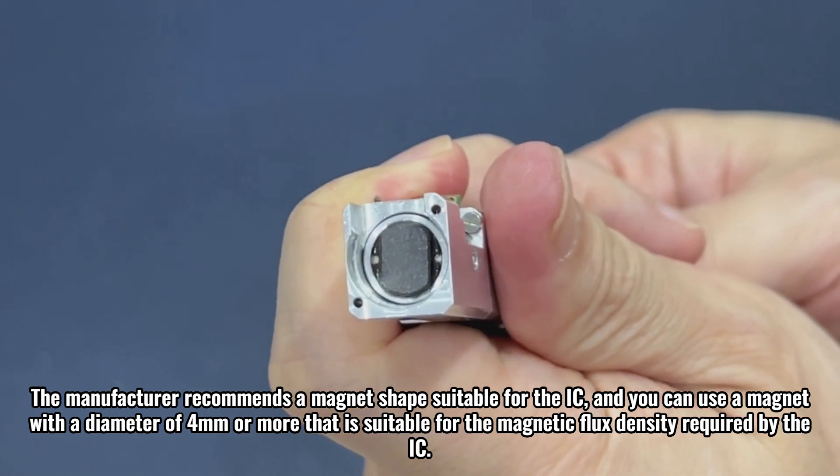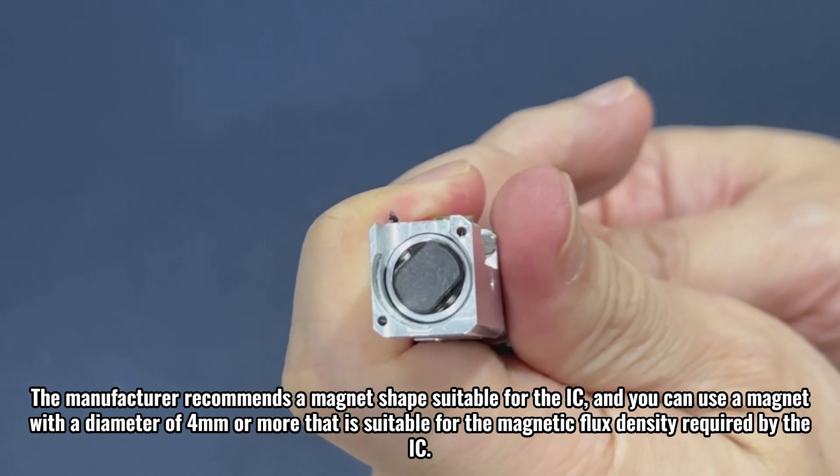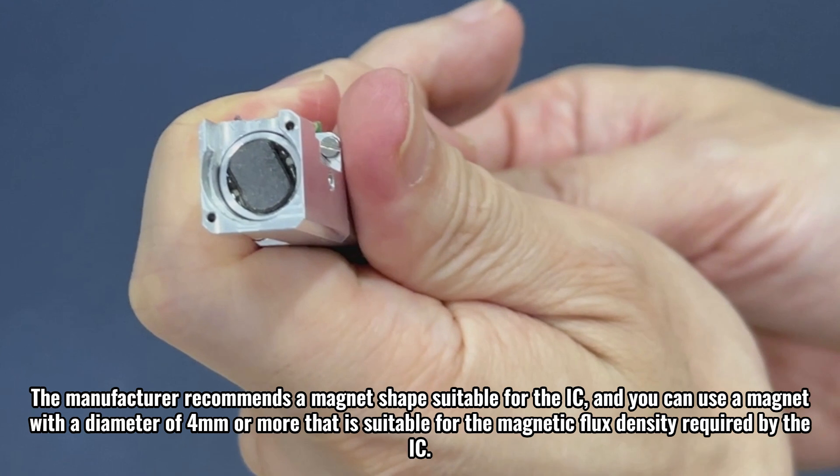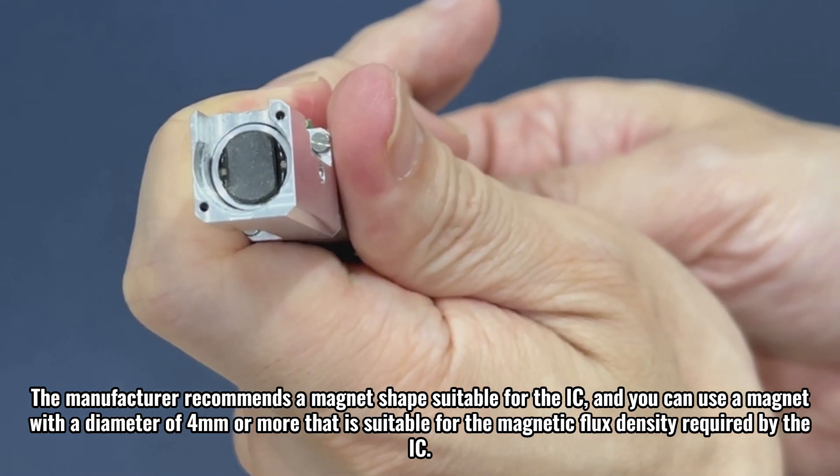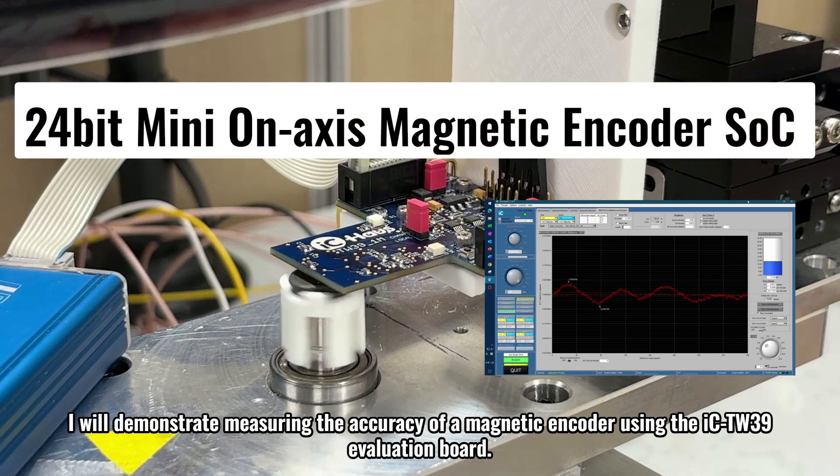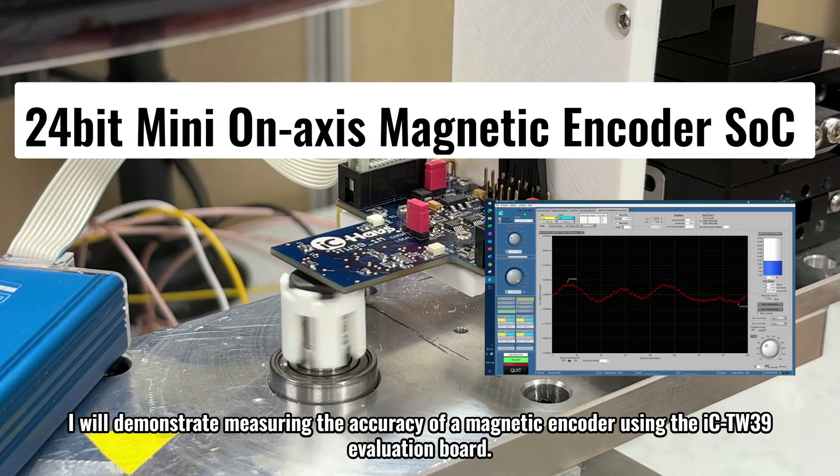The manufacturer recommends a magnet shape suitable for the IC. And you can use a magnet with a diameter of 4mm or more that is suitable for the magnetic flux density required by the IC.